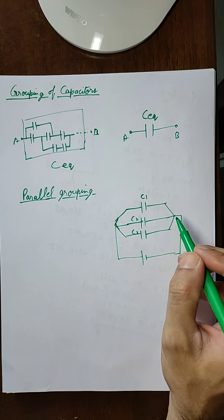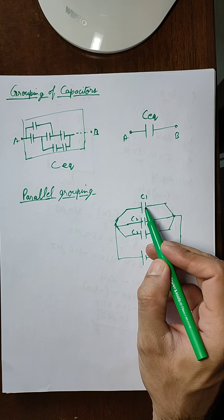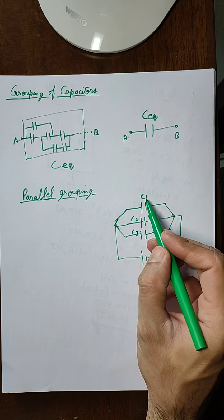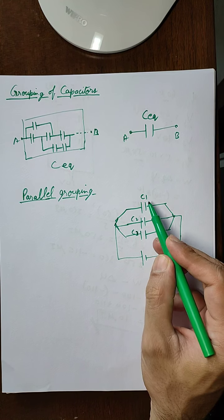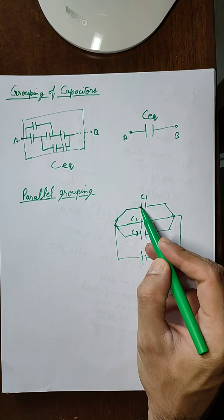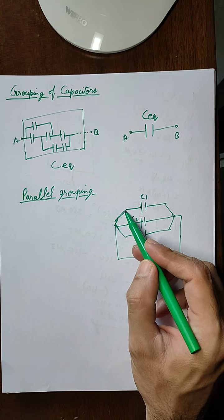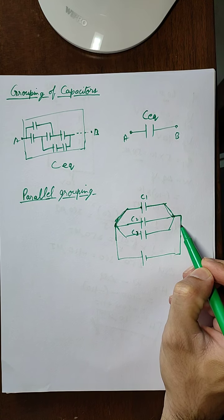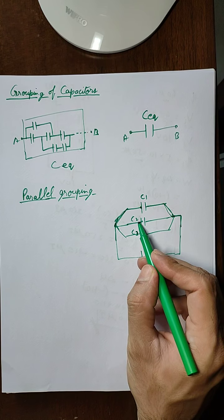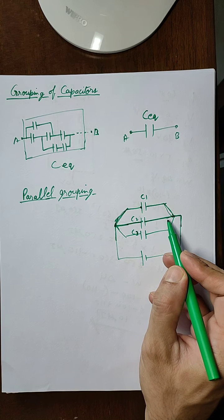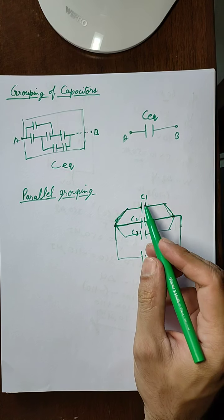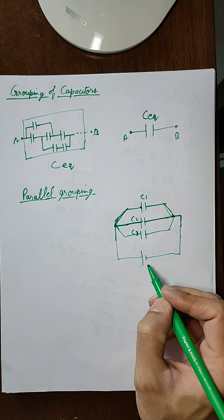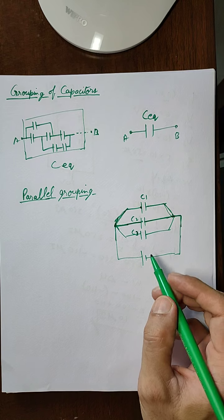When this kind of connection is done, it is called a parallel connection. In a parallel connection, each of the plates of the capacitor is connected to the terminal of the battery. The left plate of C1 is connected to the battery via one connection and the right plate via another. Similarly, C2's left and right plates are both connected to the battery, and same for C3. Such a combination is called parallel combination.